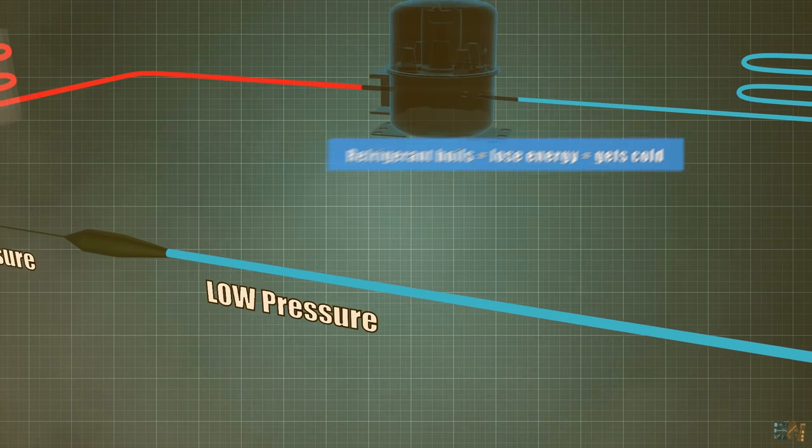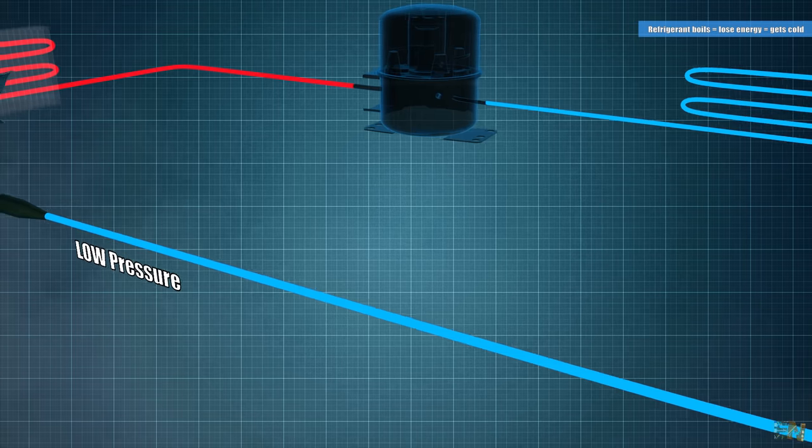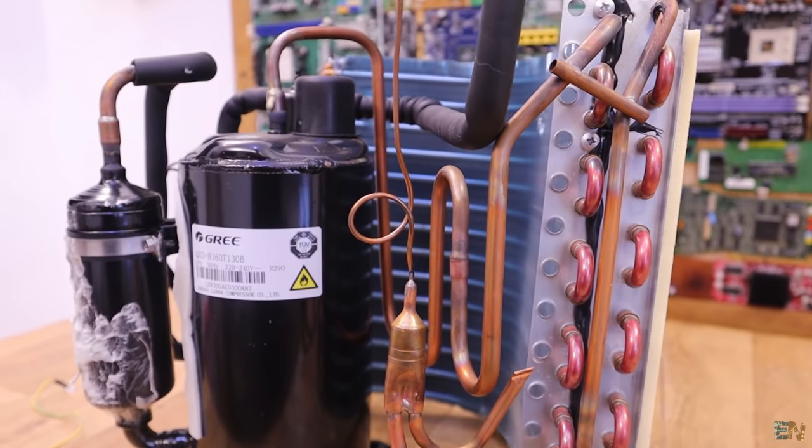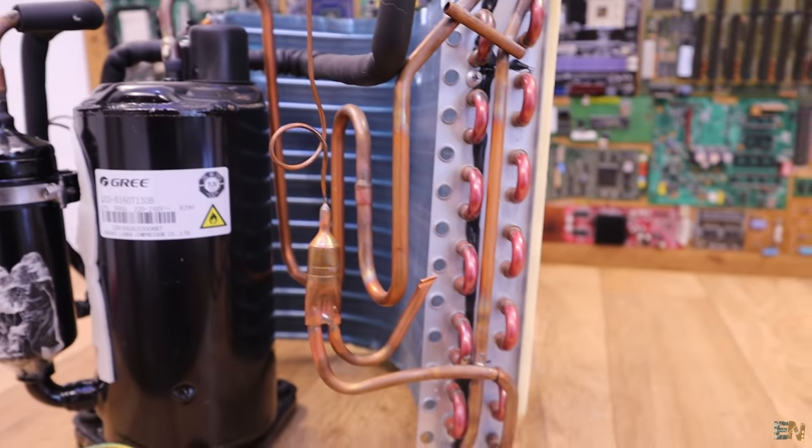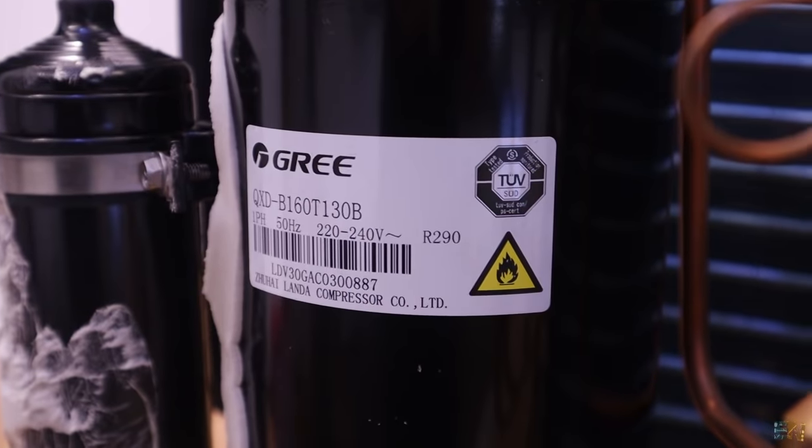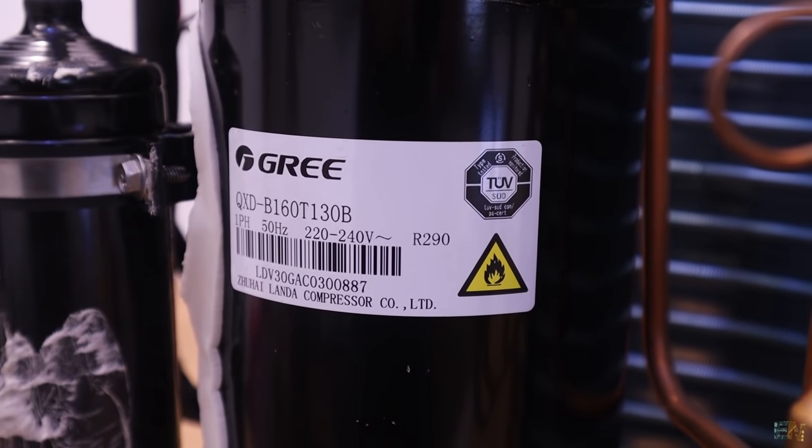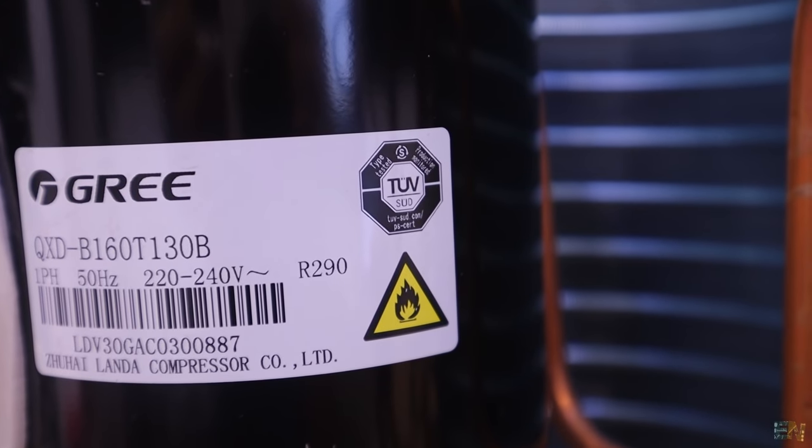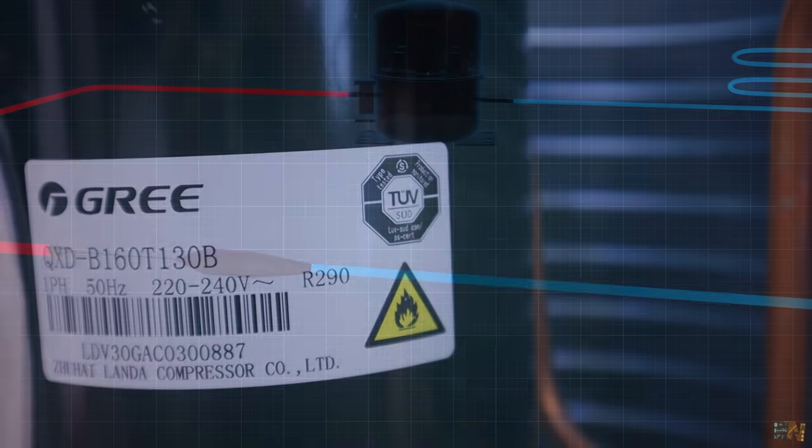Now this refrigerant is a special liquid, it's not water. It's a special substance that will boil at room temperature. A commonly used liquid is the R22 or the R290. As you can see, my model is using the R290. By the way, this is a very contaminating product that is damaging the ozone layer a lot.